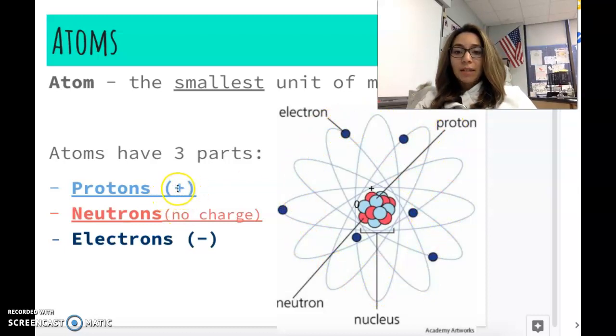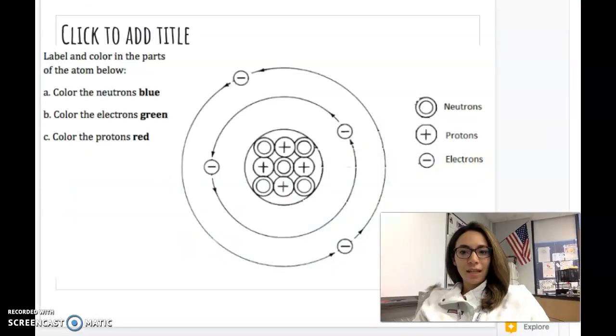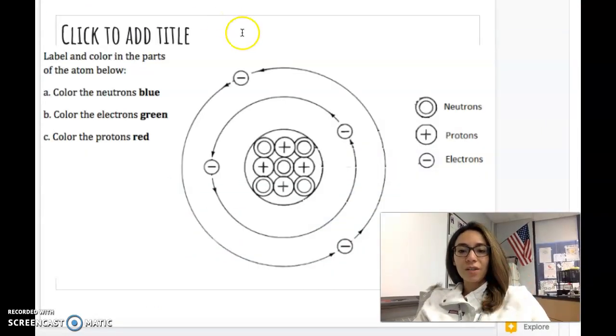Protons have a positive charge. That's why I have a plus sign here. Positive charge. Neutrons have no charge. And electrons have a negative charge. Now I want you to pause the video for a second, and in your notes, see if you can color this diagram of the atom. So I want you to color the neutrons blue. So you can see here the neutrons look like these. The electrons green. And the protons red.